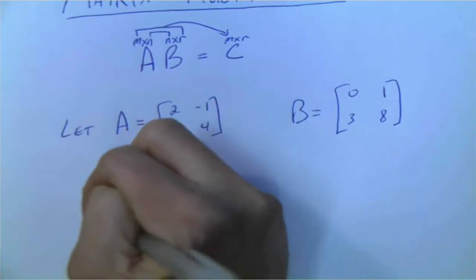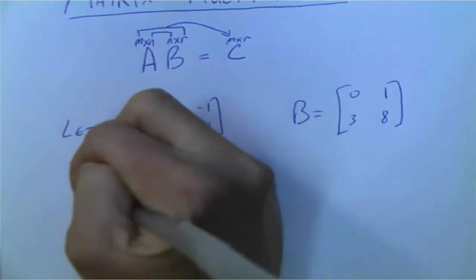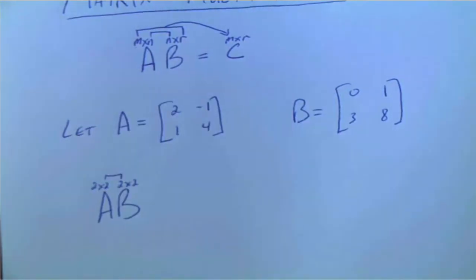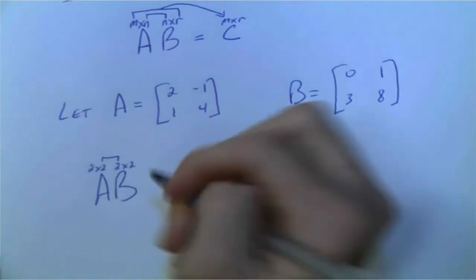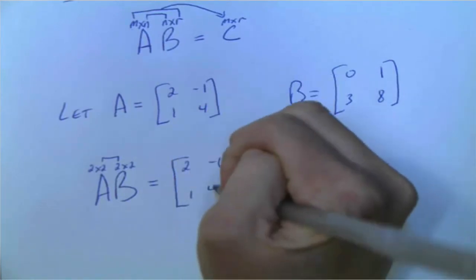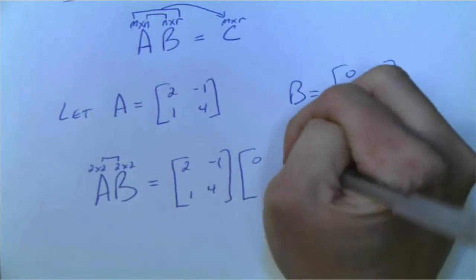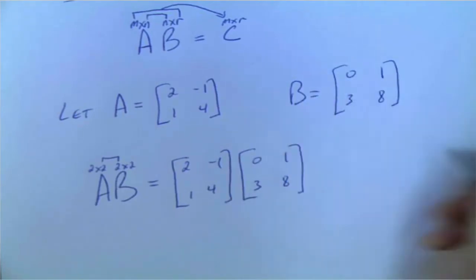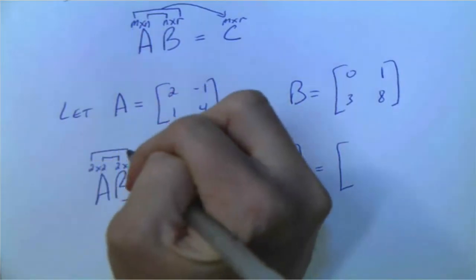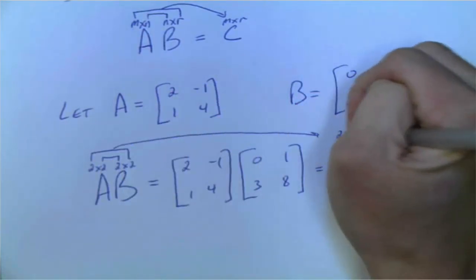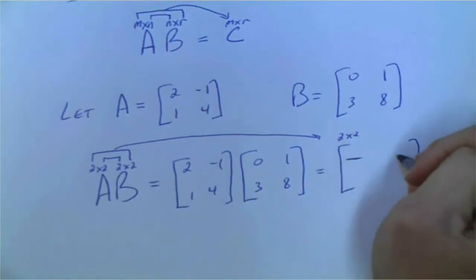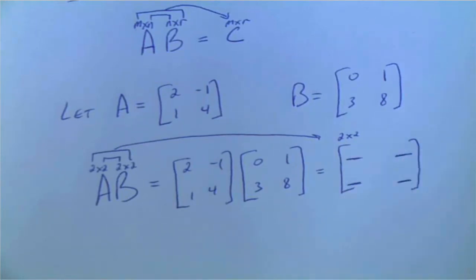So A times B. This A is a 2 by 2, and this B is also a 2 by 2. Those two inside numbers are the same, so we can actually multiply these together. So I would write matrix A first — 2, negative 1, 1, 4 — and then matrix B right next to it — 0, 1, 3, 8. The resulting matrix will be another 2 by 2, so we have four entries to find.